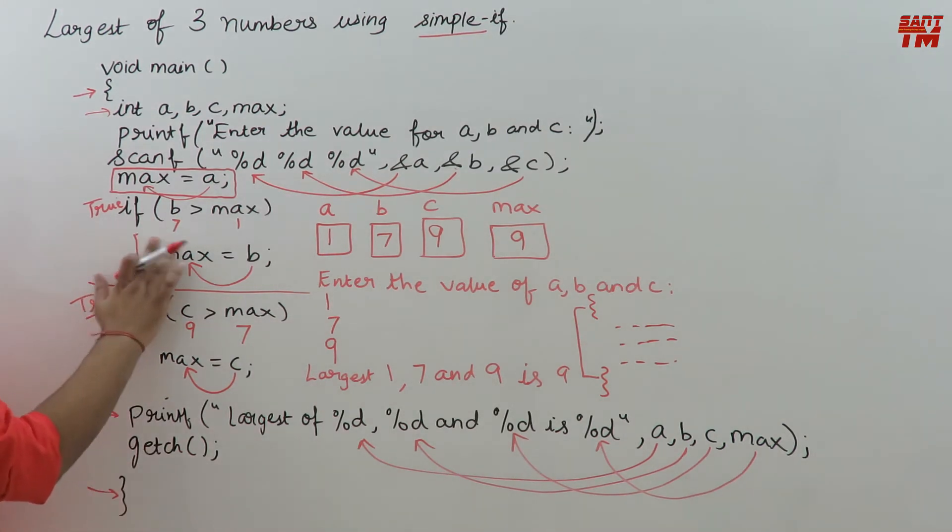But if there is already a single statement then why to put a block? Because a single statement can always come. But if more than one statement have to be executed with this if then we put it in block. So if there is a single statement we can skip writing the braces. But if there are two or three statements associated with the if part then we have to put the block. This is the concept. So actually in this program we can skip this braces.